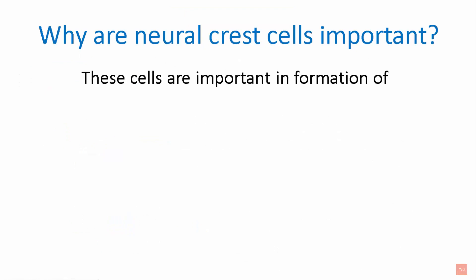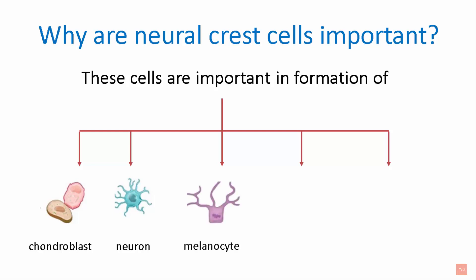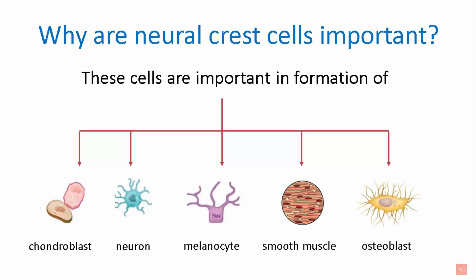Why are neural crest cells so important? These cells are important in the formation of chondroblasts that form cartilage, neurons that form brain cells, melanocytes that form the skin, smooth muscles like the muscles in the heart, and osteoblasts that form bone.